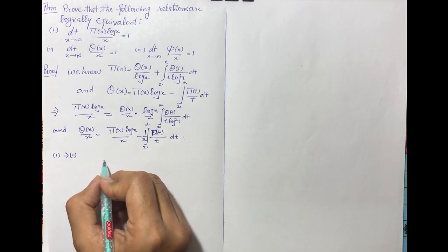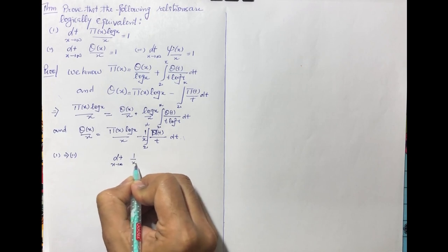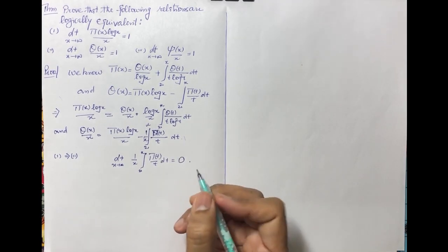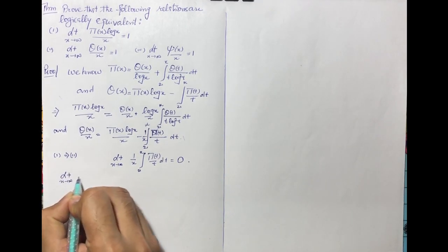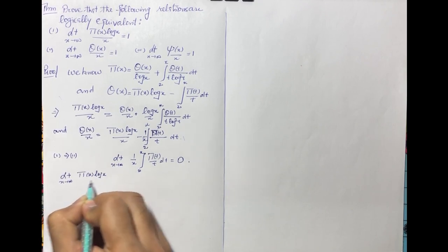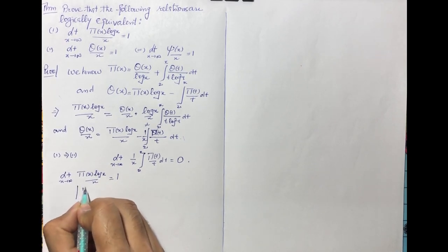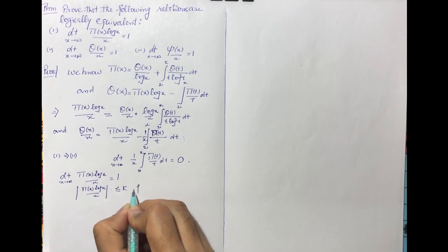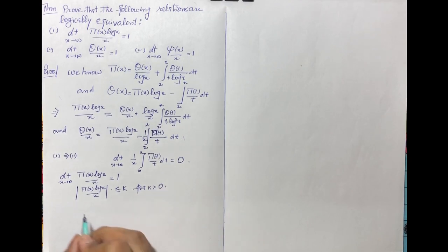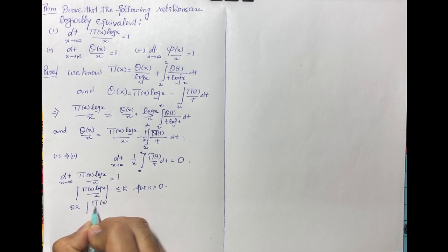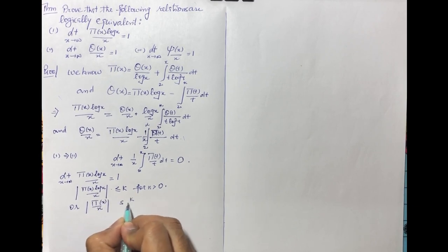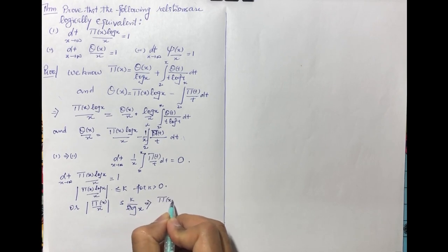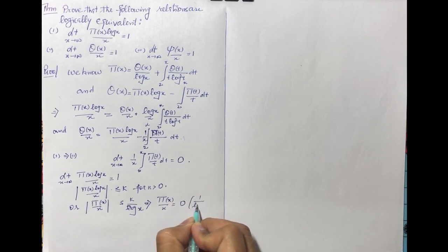We need to show that limit as x tends to infinity of (1/x)·∫₂ˣ π(t)/t dt = 0. To show this, we start with expression 1: the limit as x → ∞ of pi(x)·log(x)/x = 1, which means pi(x)·log(x)/x is bounded. So there exists some positive constant K such that pi(x)/x ≤ K/log(x). Using big-O notation, this may be written as pi(x)/x = O(1/log x).